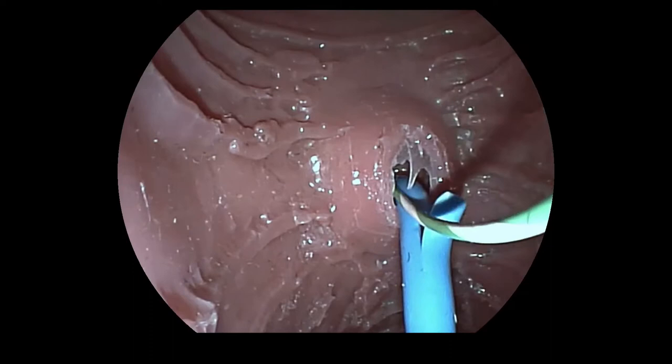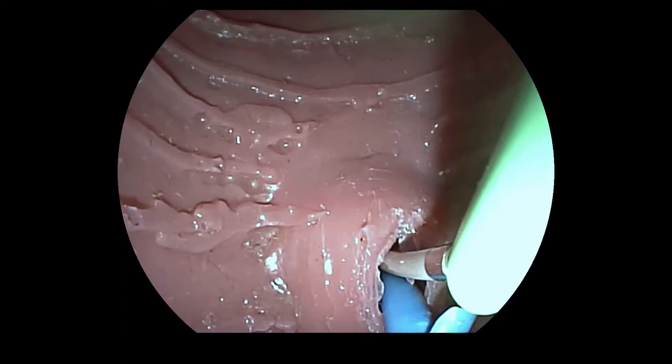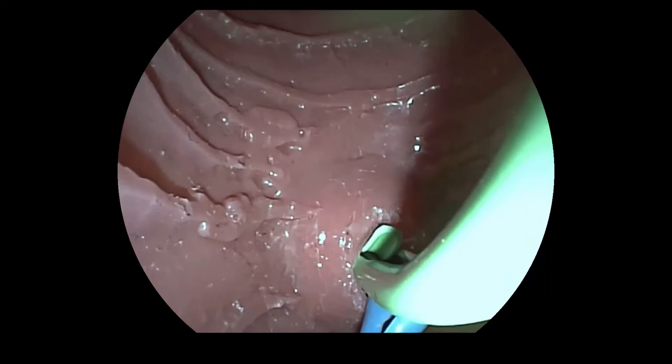For multi-stenting, after successfully placing the first prosthesis, it is possible to reload the prosthesis placement system with further prosthesis. The placement of each subsequent prosthesis mirrors the initial placement.